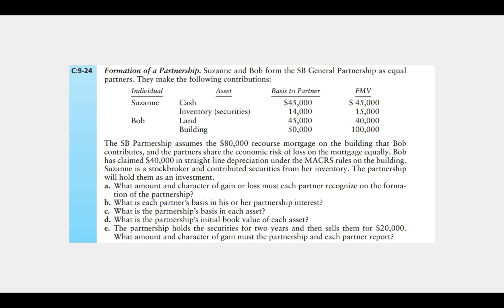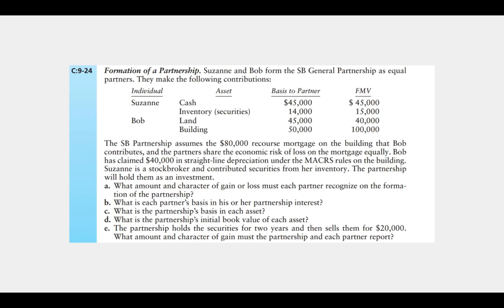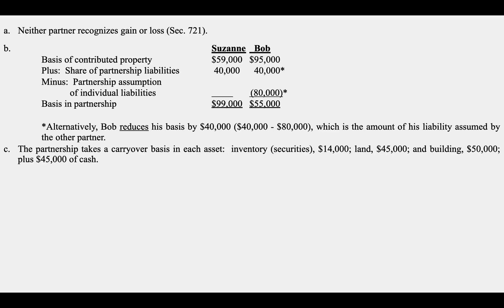For part C, what is the partnership's basis in each asset? This is the inside basis. The partnership takes a carryover basis in each asset—inventory, land, building, and cash. There could be adjustments but none are present in this problem. For part D, the partnership's initial book value of each asset is each asset's fair market value at the time of contribution. This is important when comparing book taxes and tax taxes to compute deferred tax assets or liabilities.